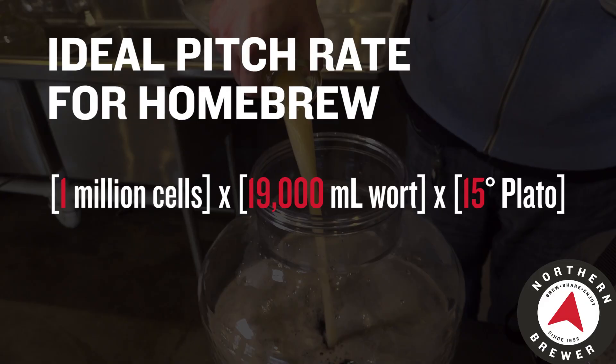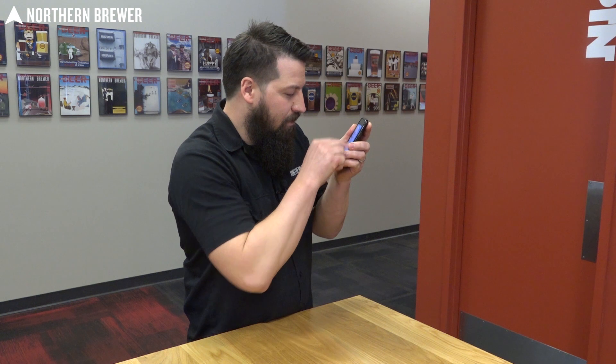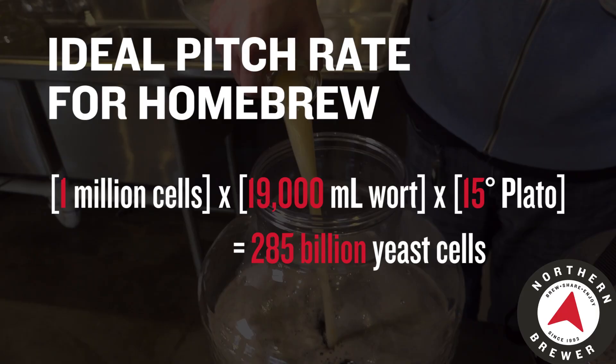Let's recap: one million yeast cells times your milliliters of wort (19,000 for a five-gallon batch) times your degrees Plato. For a 1.060 gravity beer, that's 15 degrees Plato. So it's one million times 19,000 times 15. Using a calculator, that works out to 285 billion yeast cells as your ideal pitch rate. If you got 285 billion, you followed the math correctly.